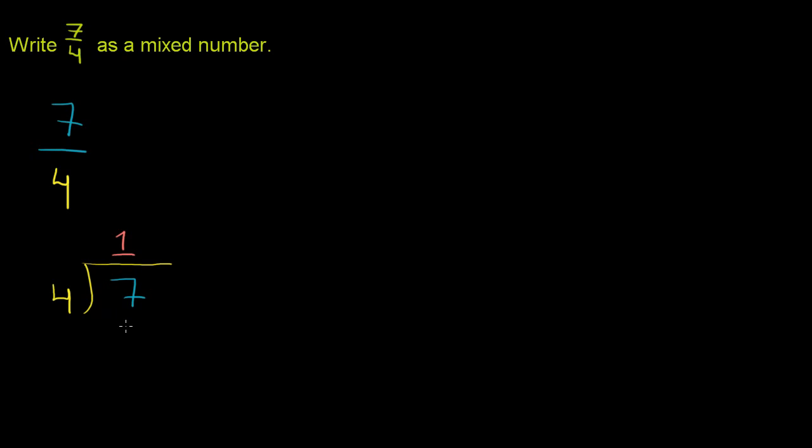1 times 4 is 4. And then what is our remainder? 7 minus 4 is 3. So if we wanted to write this in plain, well, let me just do the problem, and then we'll think about what it means in a second. So you see that 4 goes into 7 one time. So you have one whole here. You have one whole.